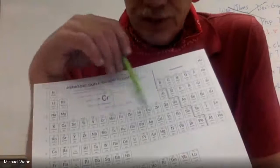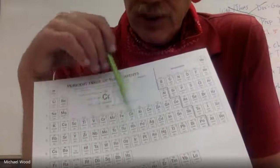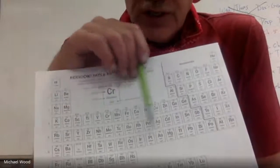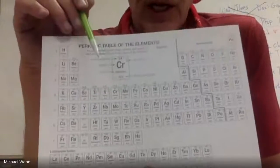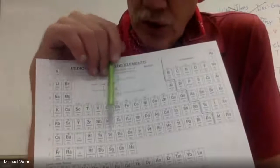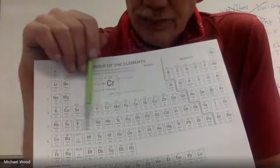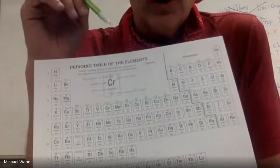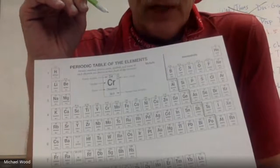The middle section of the periodic table, if it looks kind of like a lopsided H, that crossbar section — those are called the transition metals.